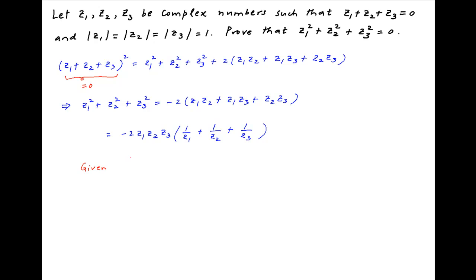Now, we are given that the absolute value of z1 is equal to 1. Therefore, the square of the absolute value of z1 is also equal to 1. The absolute value of z1 squared can be written as z1 times the conjugate of z1, and this is equal to 1. Therefore, 1 upon z1 is equal to the conjugate of z1.